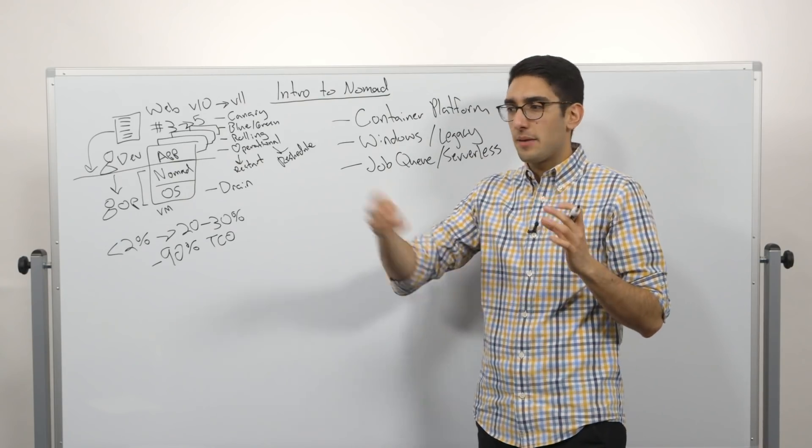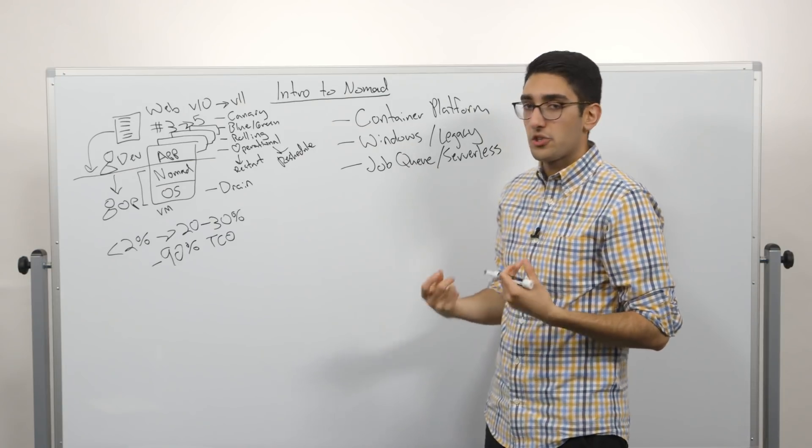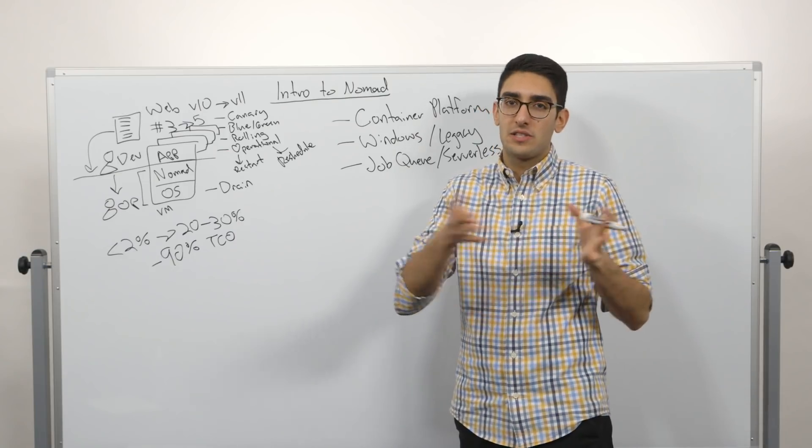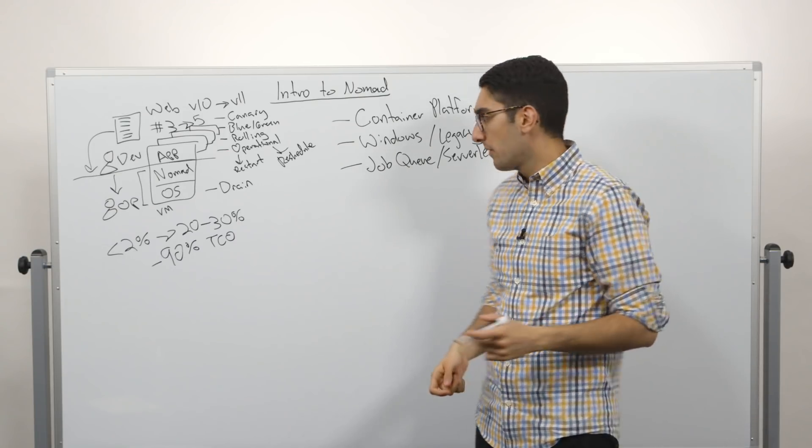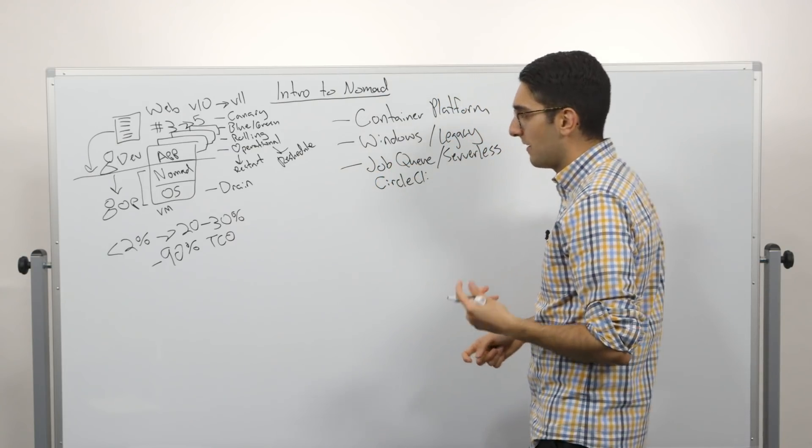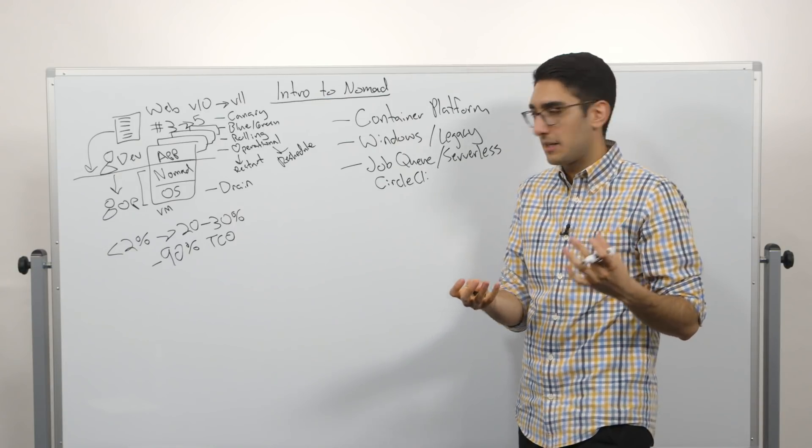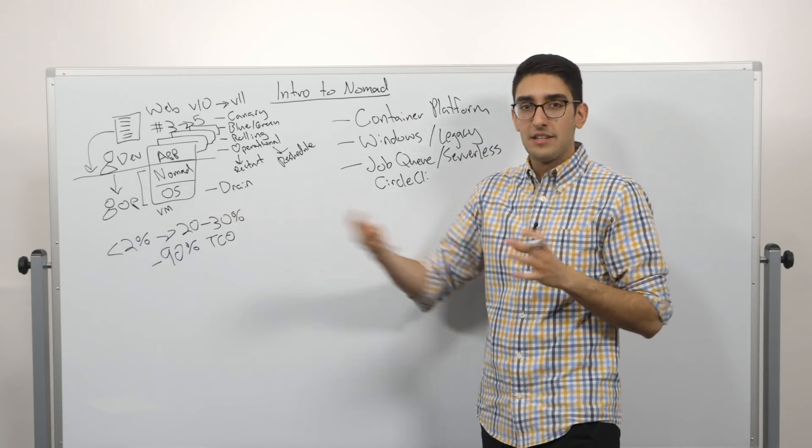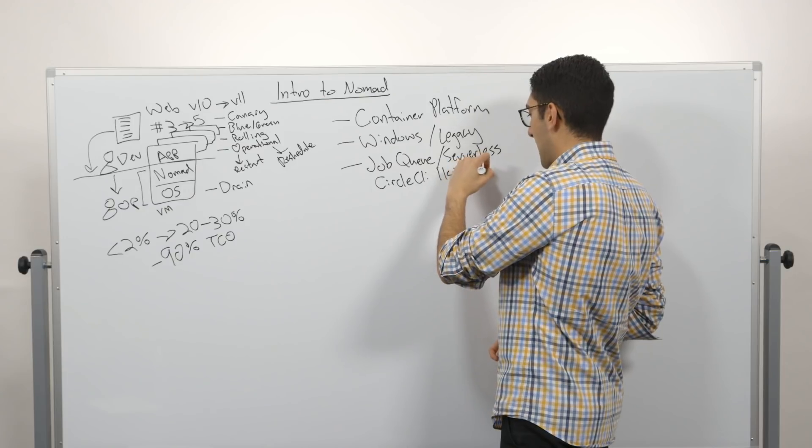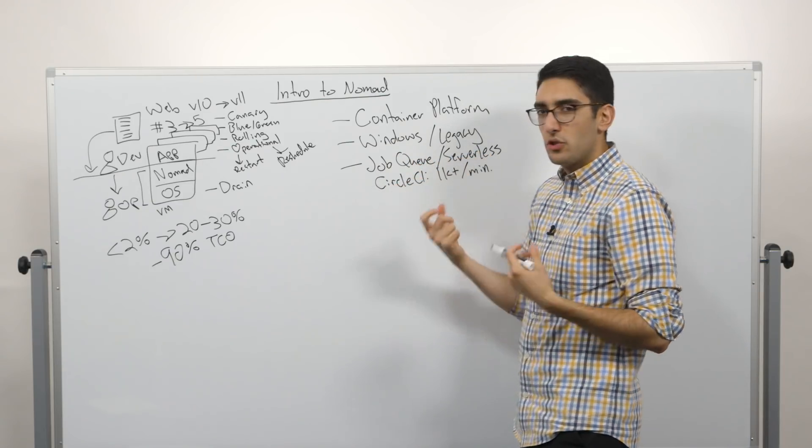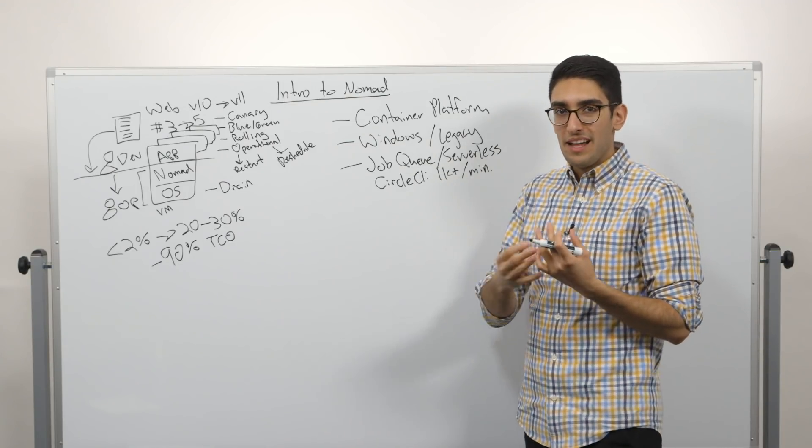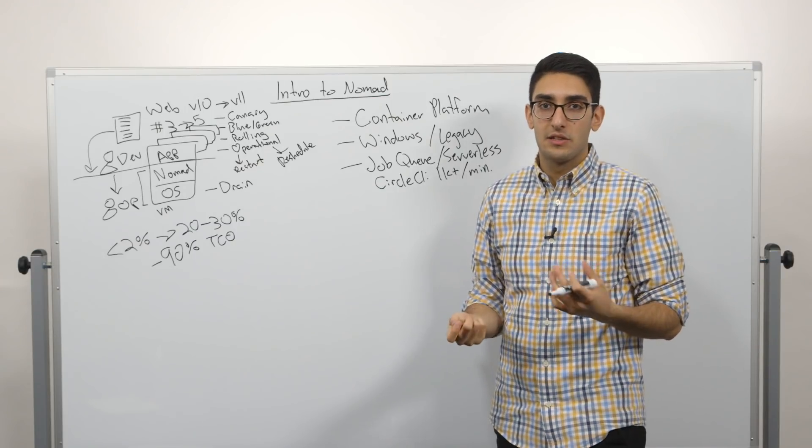How do we translate that event into something that needs to execute? So a great example of this is CircleCI. Every time a commit comes in, CircleCI has to trigger a build that goes and tests, does this cause a change, yes or no? And so CircleCI has publicly talked about how they use Nomad behind the scenes for their infrastructure. And so they get a webhook in an event that a commit has taken place. They translate that and submit a job to Nomad to now go run that build. And what they see is being able to submit well over a thousand jobs a minute to Nomad.